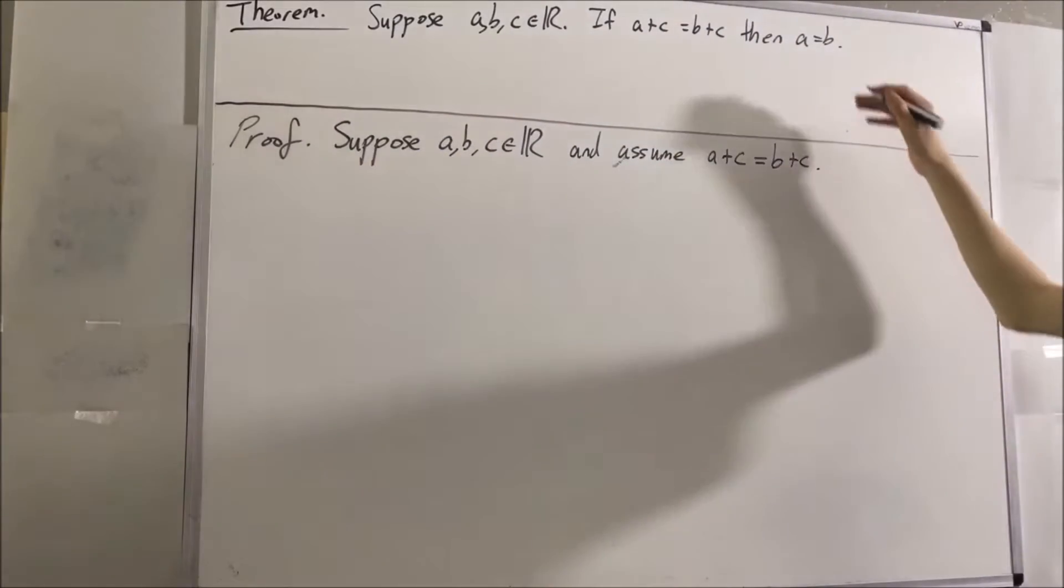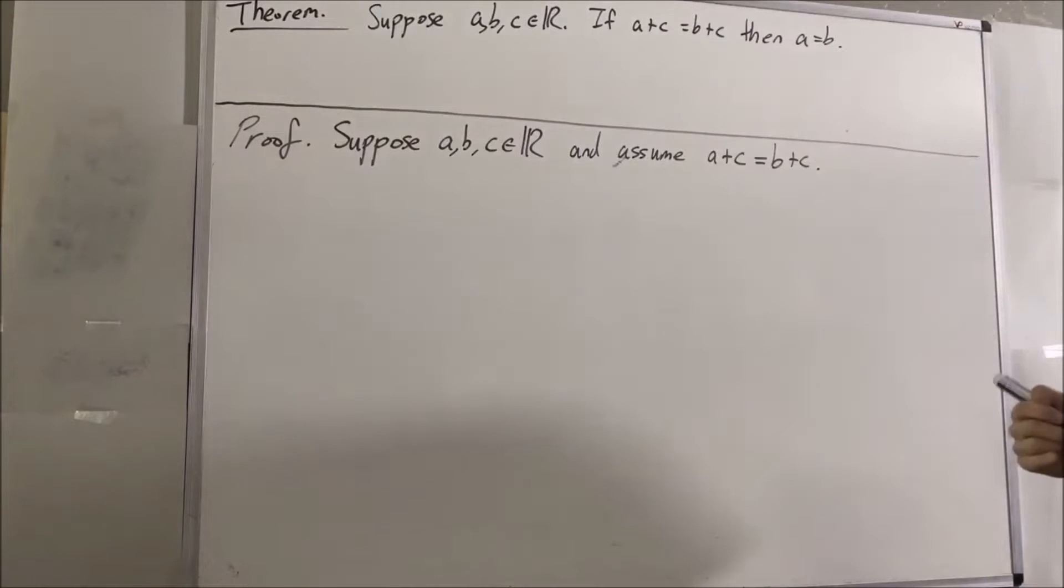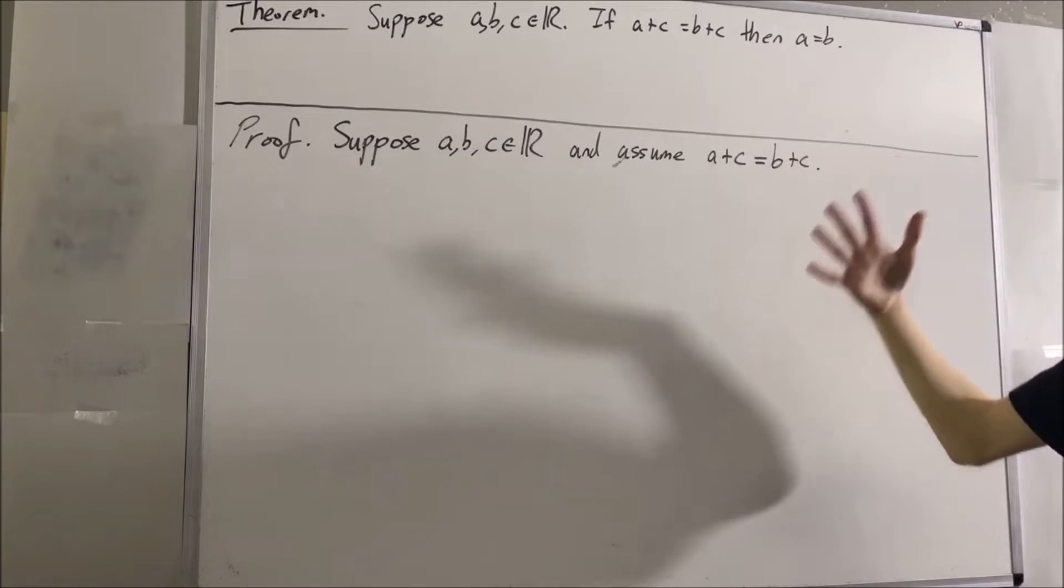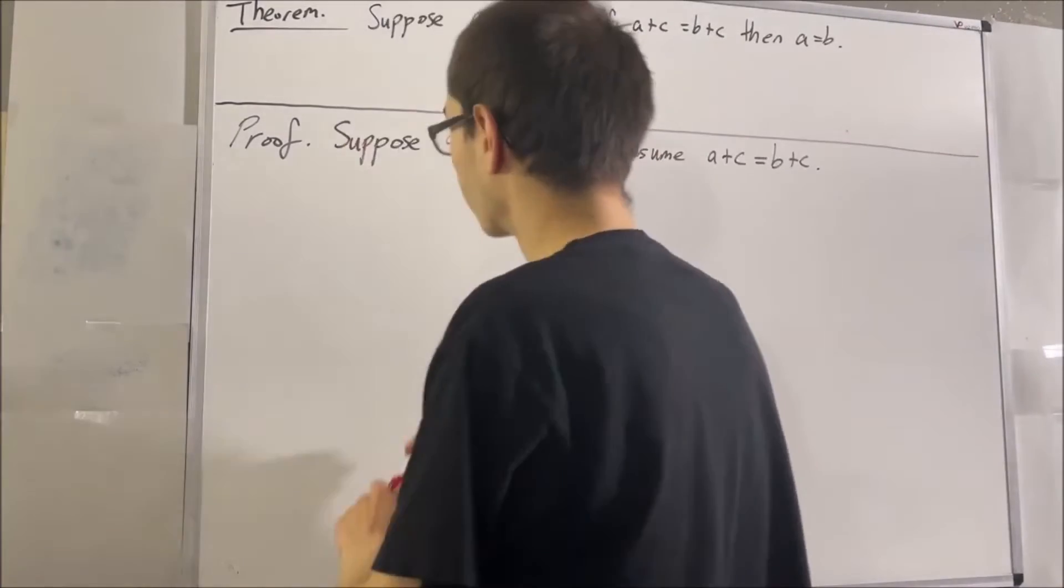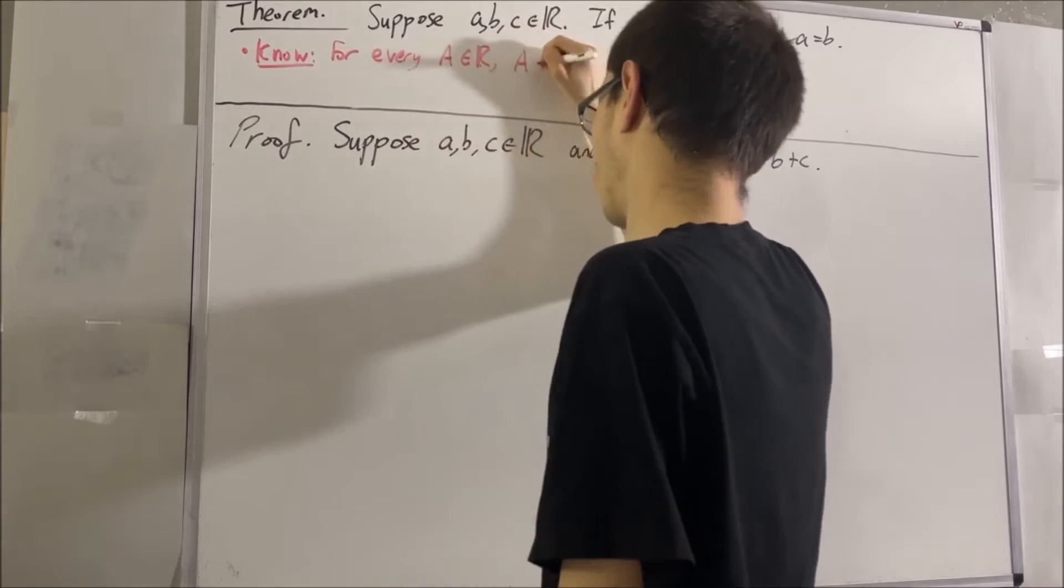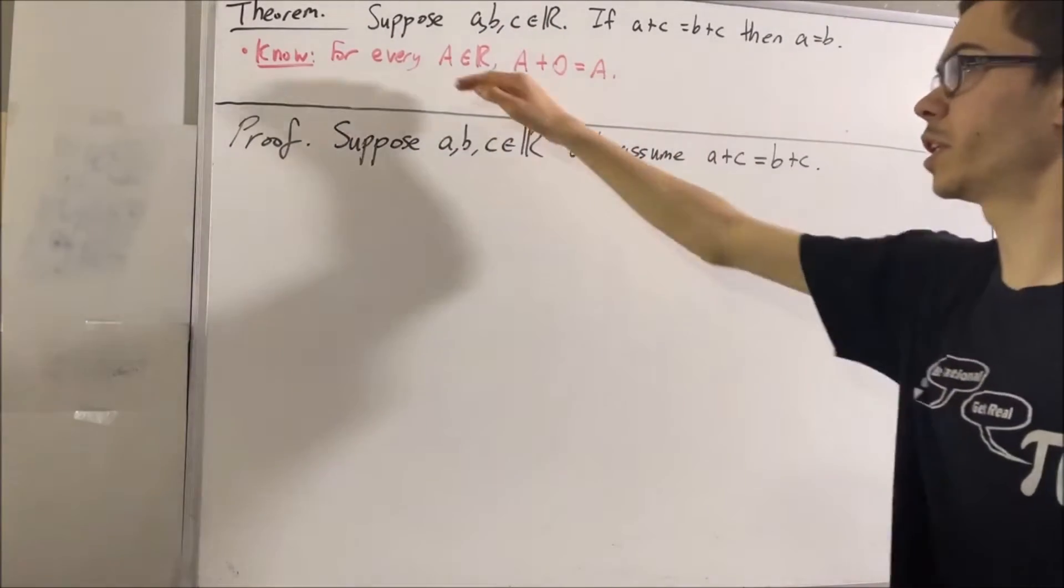Now, our goal is to deduce that A is equal to B. We're going to use some of the field properties of the real numbers in order to do this. First of all, we know that for every real number A, A plus 0 is equal to A. So we're going to use this.